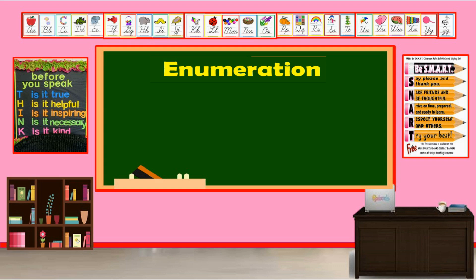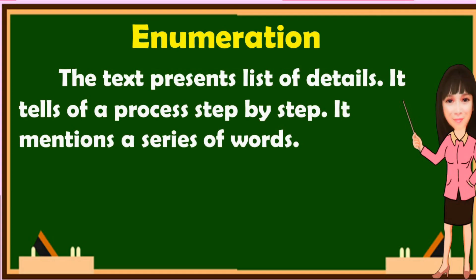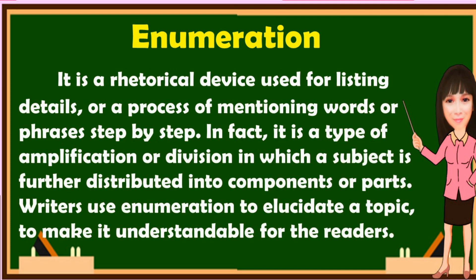We have another text type: enumeration. This text type has a listing of important points on the text. It focuses on listing facts, characteristics, or features. It is a rhetorical device used for listing details or a process of mentioning words or phrases step by step. It is a type of amplification or division in which a subject is further distributed into components or parts. Writers use enumeration to elucidate a topic to make it understandable for the readers.